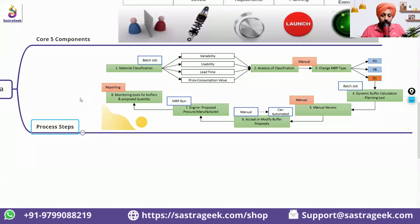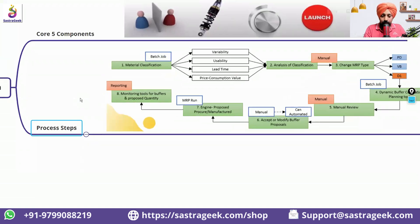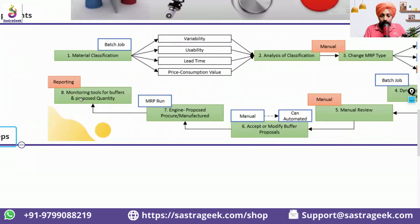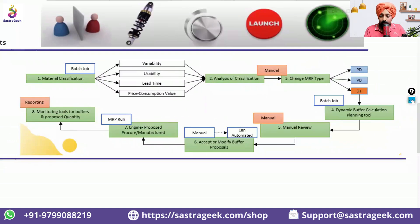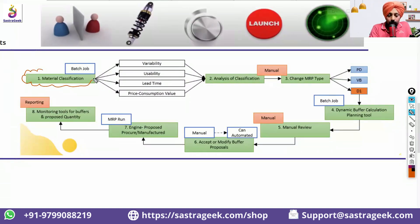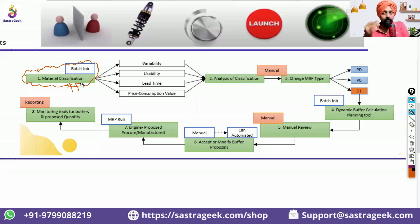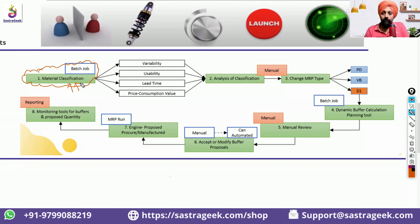The first step in DDMRP is material classification. This involves separating your oranges from apples and mangoes — it's not like a one-size-fits-all approach of just assigning PD or VB to everything. There should be a proper classification for materials.